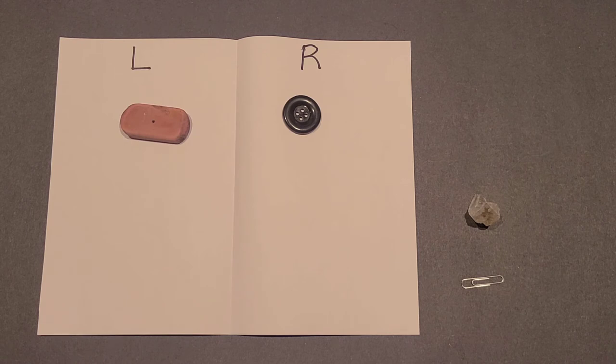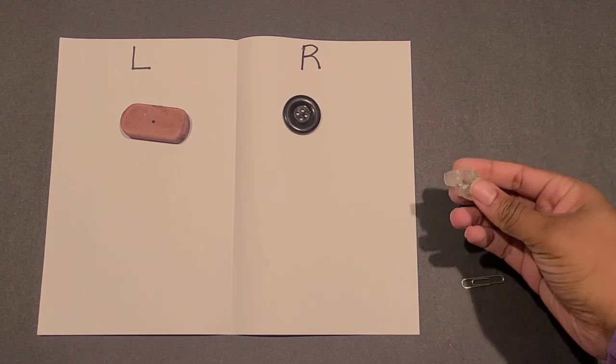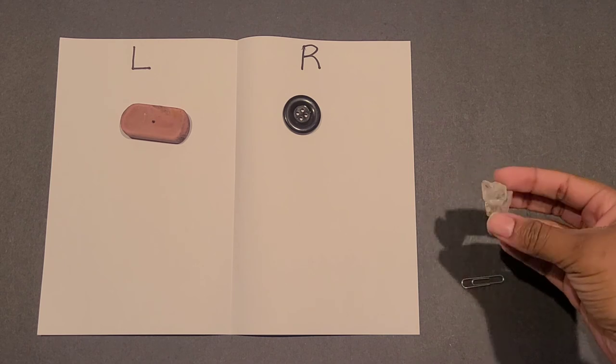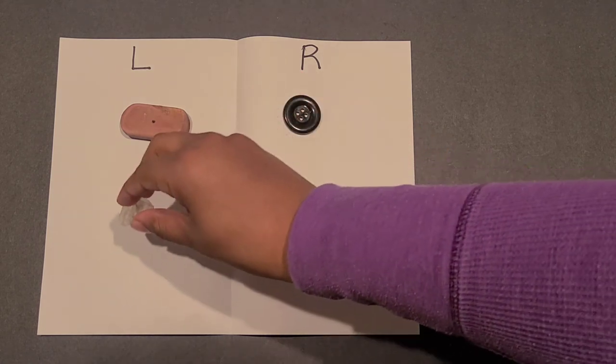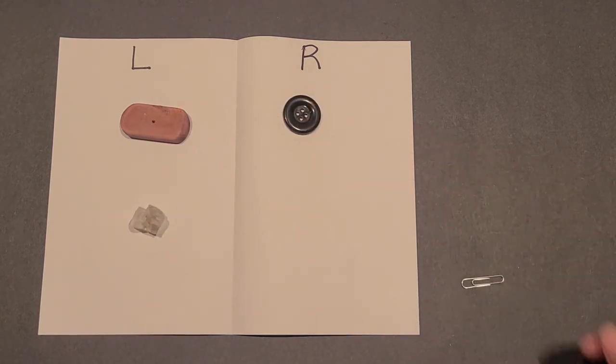For example, the child might say, can you put the rock on the left side of the paper? And you can take the rock and put it on the left side of the paper.